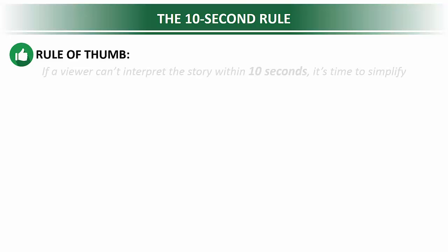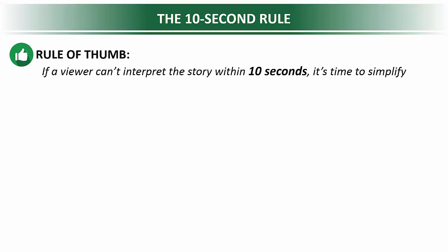I have a rule of thumb that I call the 10-second rule, which basically means that if a viewer can't interpret the story within 10 seconds, it's time to simplify. I'm about to show you a chart on the screen with a 10-second timer. At the end of those 10 seconds, pause the video and see if you can explain exactly what story that chart was intended to tell.